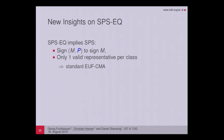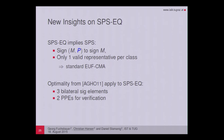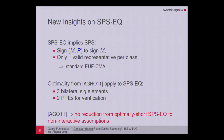We also have new results on SPS-EQ. Specifically, SPS-EQ implies ordinary structure-preserving signatures: to sign a vector M, we include an additional component holding the generator, which restricts each class to one valid representative — exactly like standard UF-CMA security of structure-preserving signatures. This means optimality criteria from Abe et al. carry over to SPS-EQ: we cannot do better than three signature elements from both G1 and G2 combined, and we need at least two pairing product equations for verification. Furthermore, for optimally short SPS-EQ there is no reduction to any non-interactive assumption, meaning the generic group model construction is optimal in this sense.